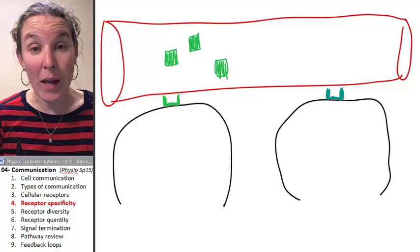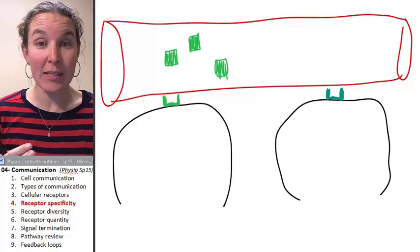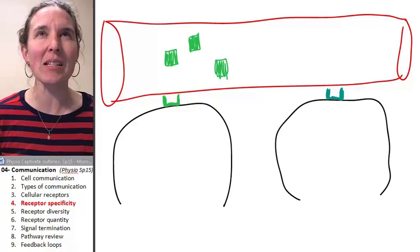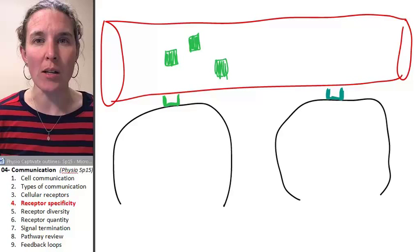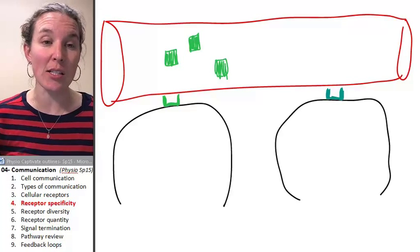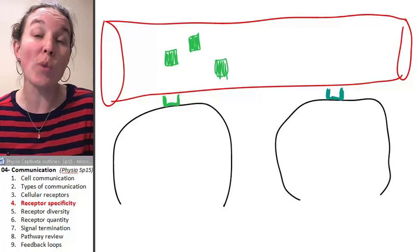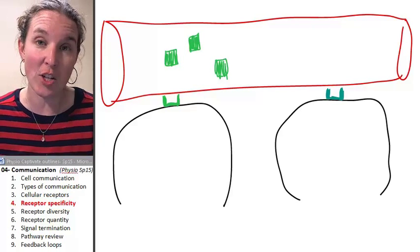So now we're going to look at different ways that our actual receptors and signaling molecules can fine-tune the response so that we can be a little more nuanced. It's not just if I send out this chemical and you have this receptor, then this is the reaction that's going to happen.